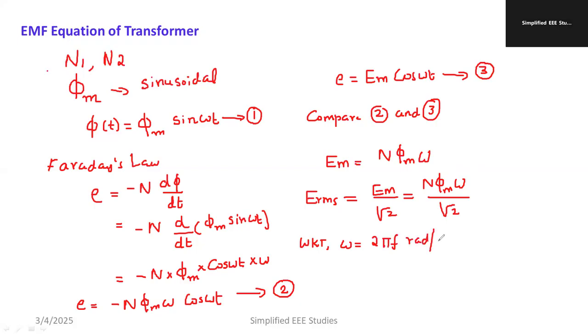We already know that omega is equal to angular frequency that you can write in the form of supply frequency, 2*pi*f radian per second. You need to substitute the value of omega. So E_rms can be written as N into phi_m into 2*pi*f divided by square root of 2.